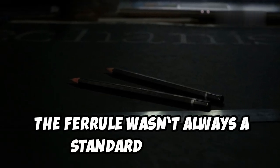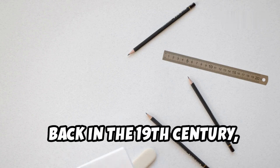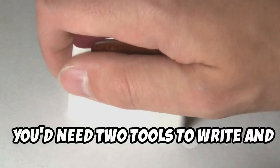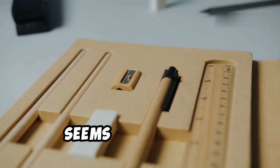The ferrule wasn't always a standard feature. Back in the 19th century, erasers were sold separately from pencils. You'd need two tools to write and correct your mistakes. Seems inconvenient, right?